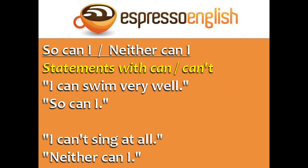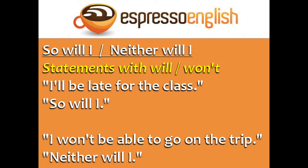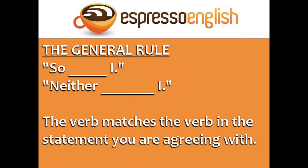'So can I' and 'neither can I' are used to agree with statements using 'can' or 'can't': 'I can swim very well' — 'so can I'. 'I can't sing at all' — 'neither can I'. 'So will I' and 'neither will I' are used to agree with statements using 'will' or 'won't': 'I'll be late for the class' — 'so will I'. 'I won't be able to go on the trip' — 'neither will I'.